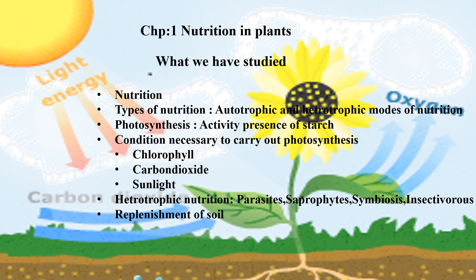Later on we have seen the conditions necessary to carry out photosynthesis — that means whether the presence of chlorophyll is necessary, whether the presence of carbon dioxide is necessary, as well as we have seen through an activity that the presence of sunlight is necessary to carry out photosynthesis.